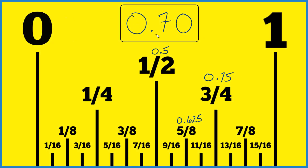If you're given 0.7 inches or 0.70 inches and you want to know where that is on a ruler or a tape measure, here's how you do it. I know that one half is 0.5 — one divided by two is 0.5 — and I know that three fourths of an inch is 0.75. So it has to be somewhere between this one half inch and this three quarters of an inch.